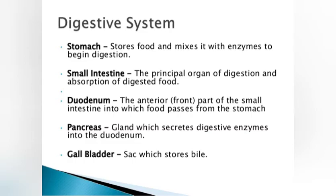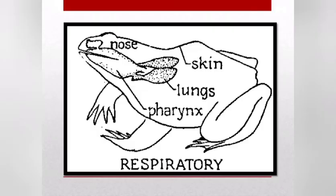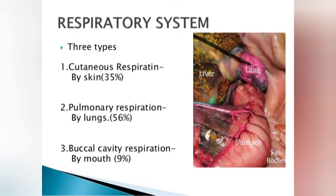The respiratory parts of the frog are the nose, skin, and lungs. There are three types of respiration: cutaneous, pulmonary, and buccal. Cutaneous respiration accounts for 35 percent, pulmonary respiration 56 percent, and buccal cavity respiration approximately 9 percent.